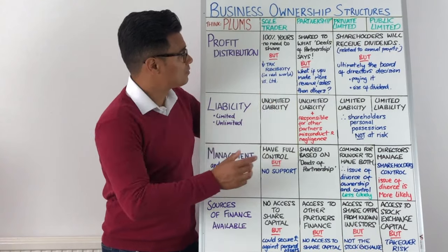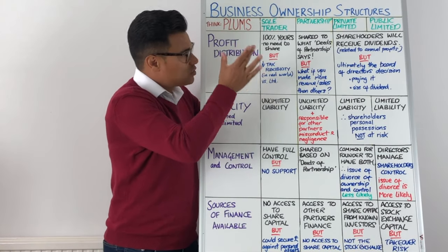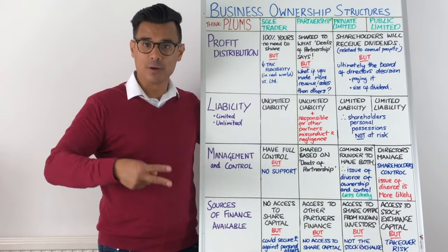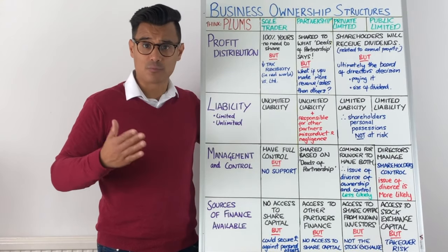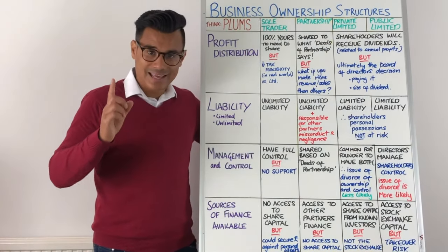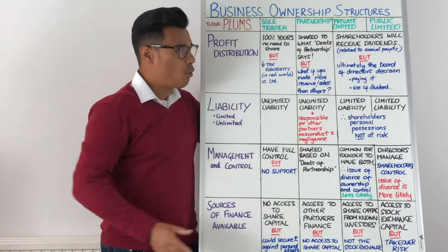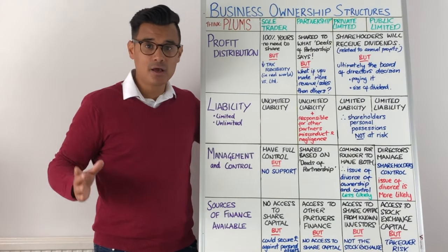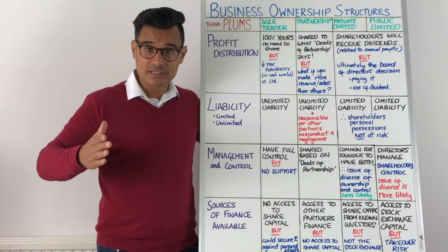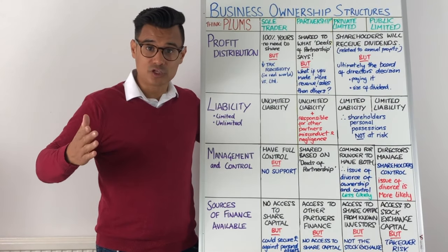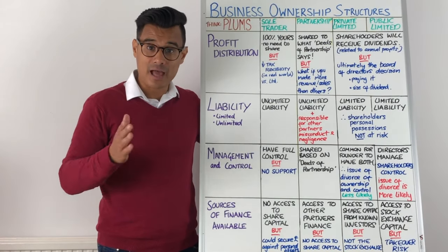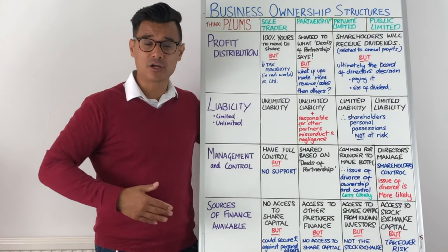In terms of Profit Distribution for partnerships, the profits will be shared according to what the deeds of partnership say. So if the deeds say the profits between two partners will be split 60-40, well that's how the profits will be split. If it says 50-50, they'll be split 50-50. But what if one of those partners is making more sales, more revenue, just doing much more than the other partner? Well, it's not going to be done on performance — the profits will be distributed based on the deeds of partnership, not actual performance. And that could cause some beef if you're doing so much more than the other partner.